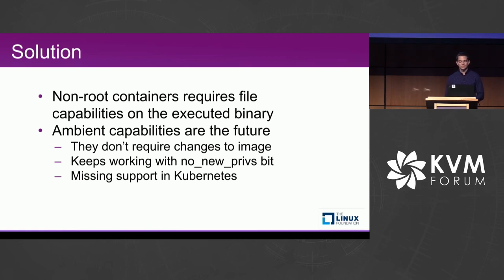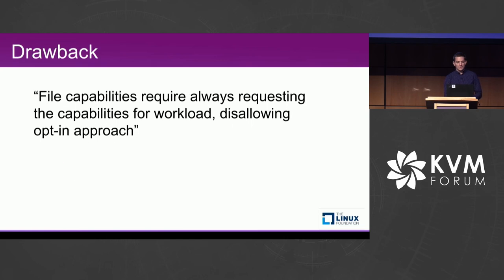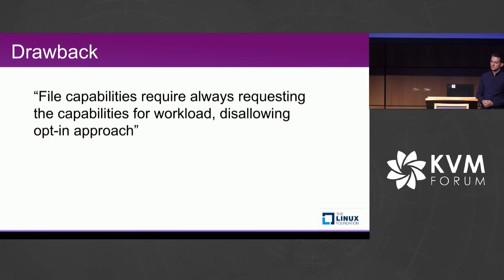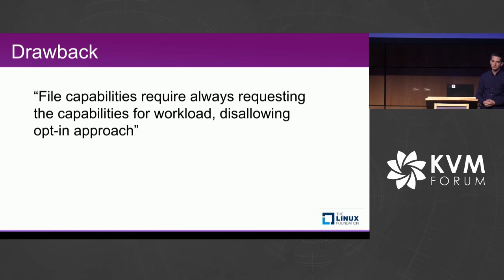The drawback of file capabilities is that you need to set them on the binary and require them for the workload. If you don't require the capabilities, process creation fails because the binary has capabilities the process isn't allowed to have. This enables an opt-in approach — for example, if you don't need VTPM, you would drop ptrace, but currently we cannot.